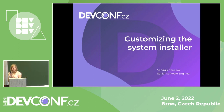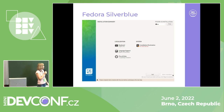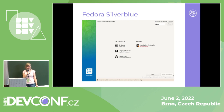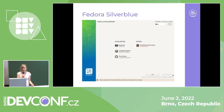So how can you customize the system installer? Basically we have one application, but it looks a little different on every distribution. For example, this is Fedora Silverblue. Silverblue and Workstation try to provide a very minimal user interface, because they install GNOME initial setup, so a lot of configuration happens after the first reboot when you can set up your user account and stuff like that. So it doesn't make sense to show it during the installation as well.